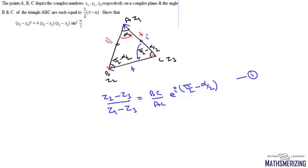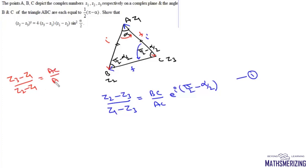Next we write the rotation for the other two vectors, again rotating anti-clockwise. Final over initial gives z3 minus z1 upon z2 minus z1 equals AC upon AB times e to the power iota alpha. Since AB equals AC, they cancel.